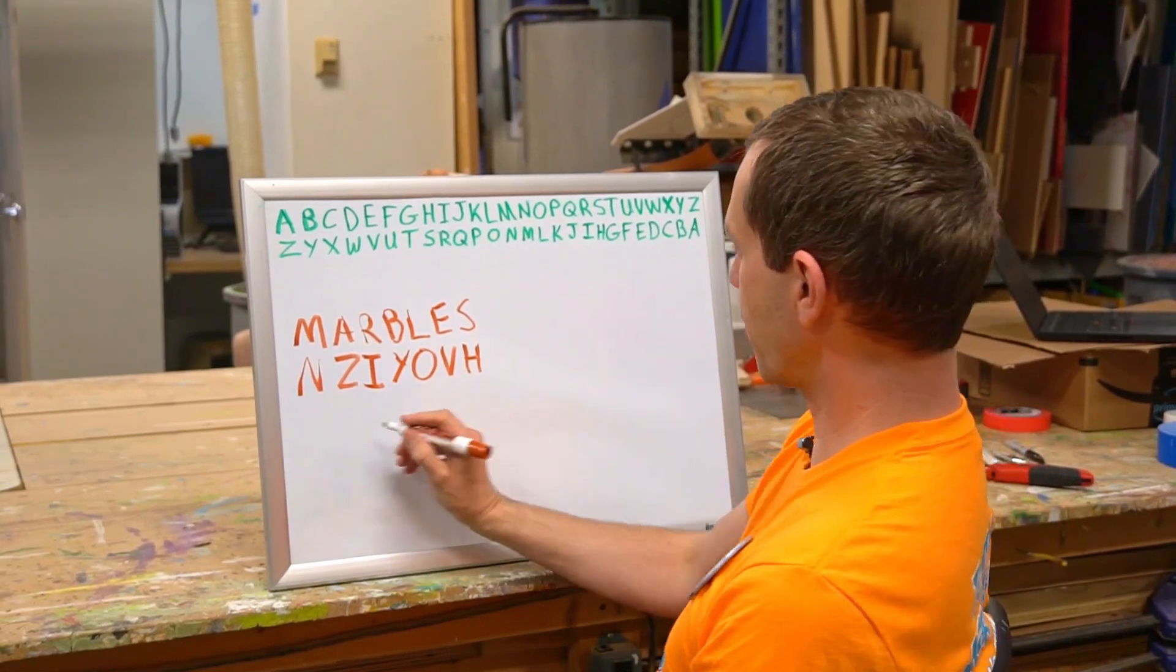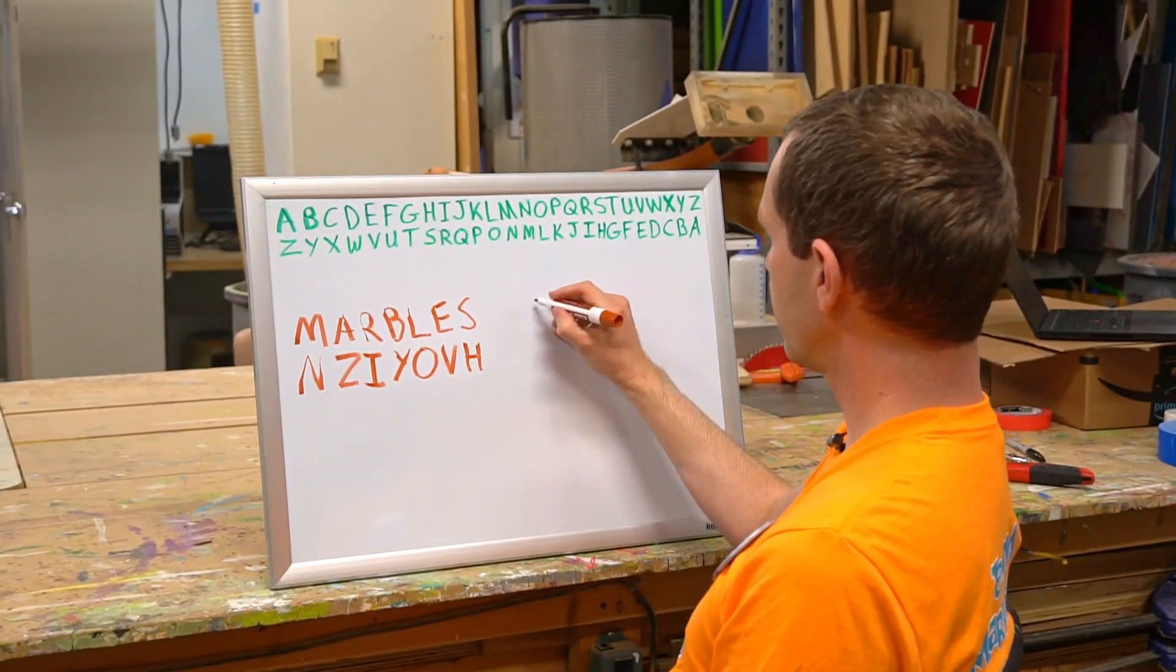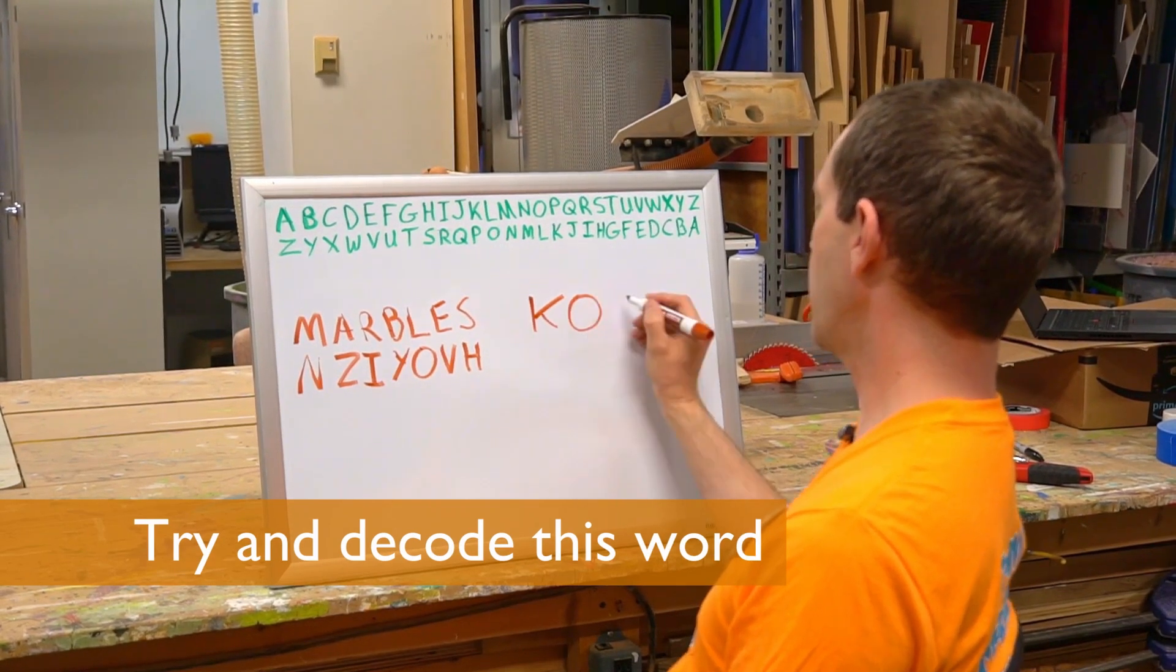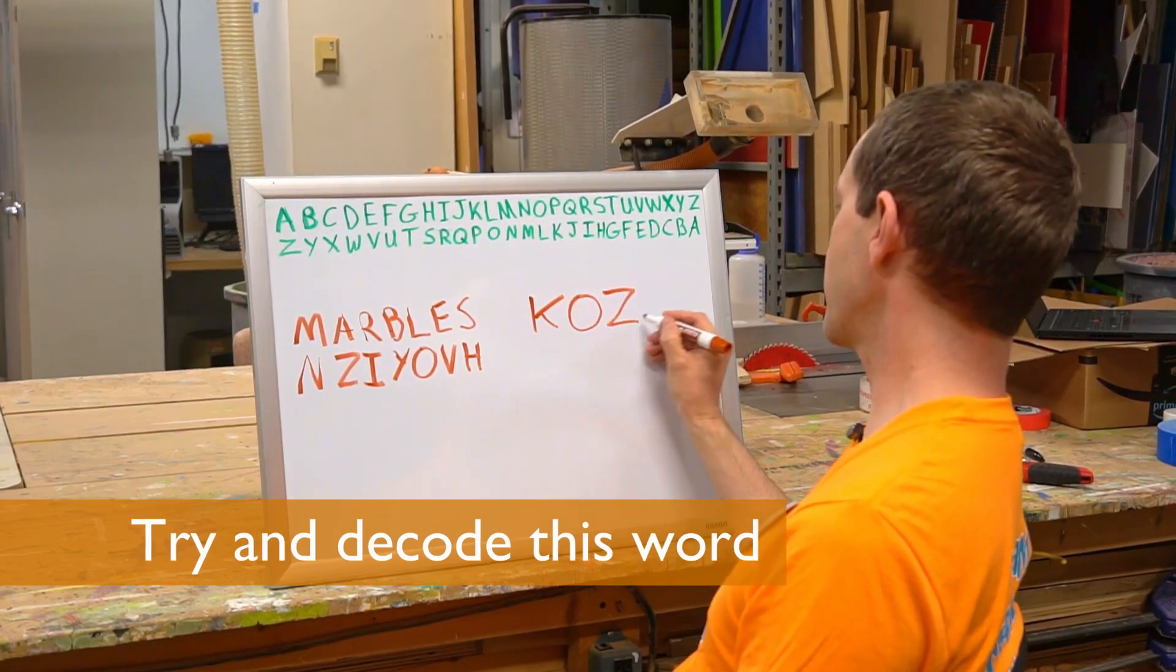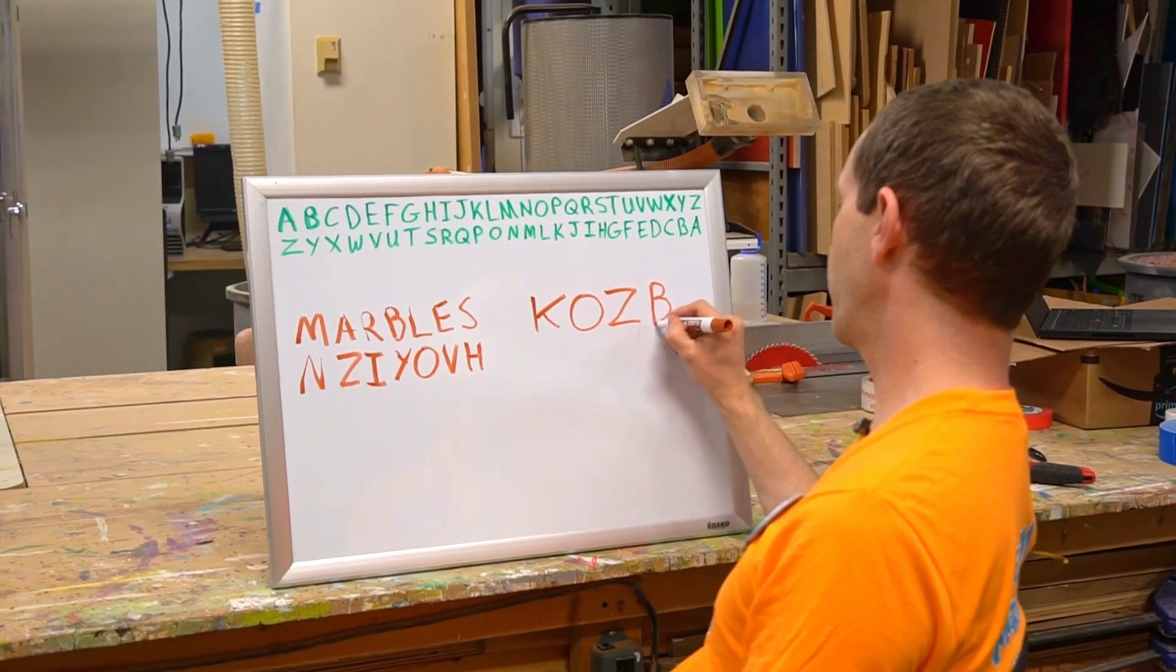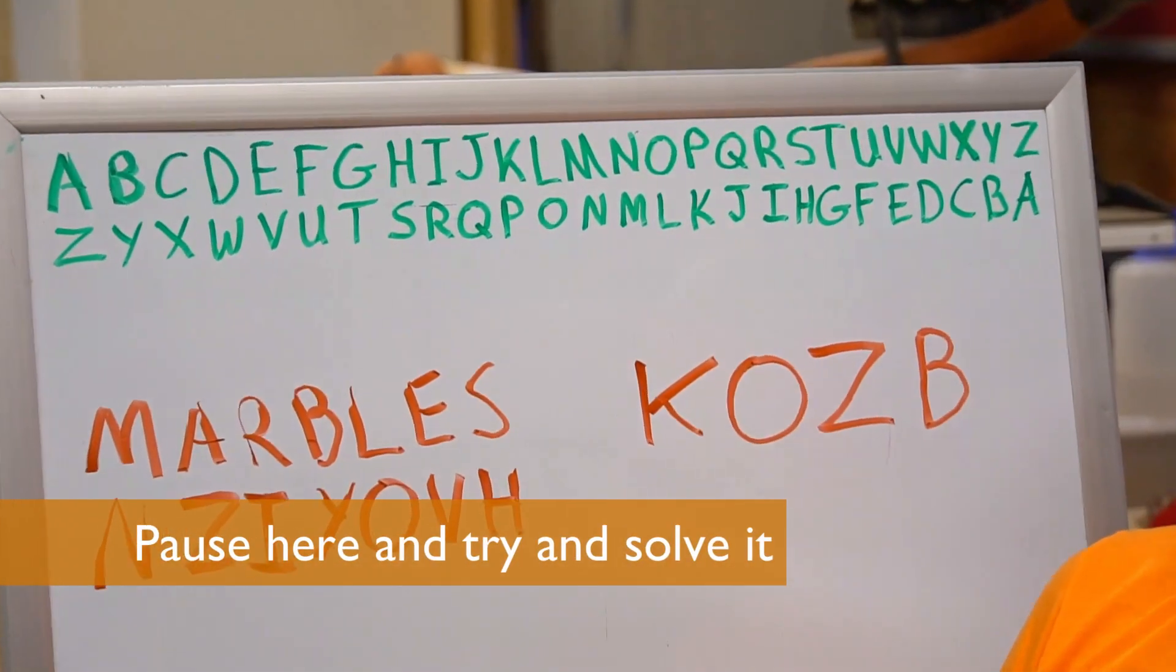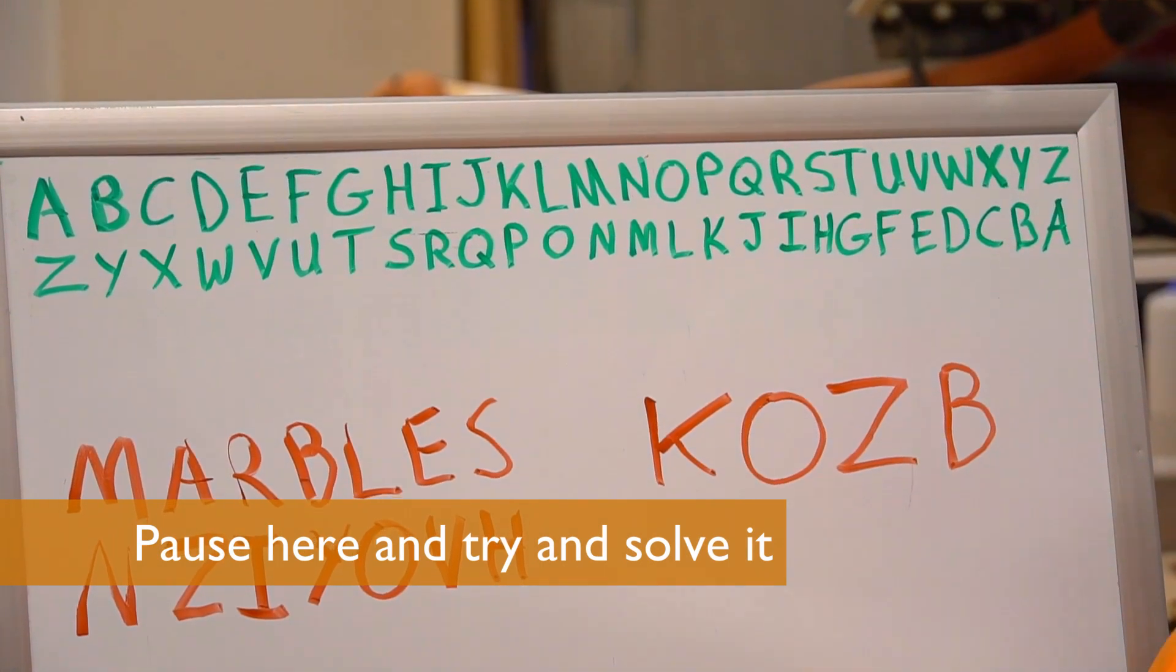Now I'm going to write down a secret message for you to decode. I'm going to write down K, O, Z, B, B. Why don't you pause here until you can figure out that code.